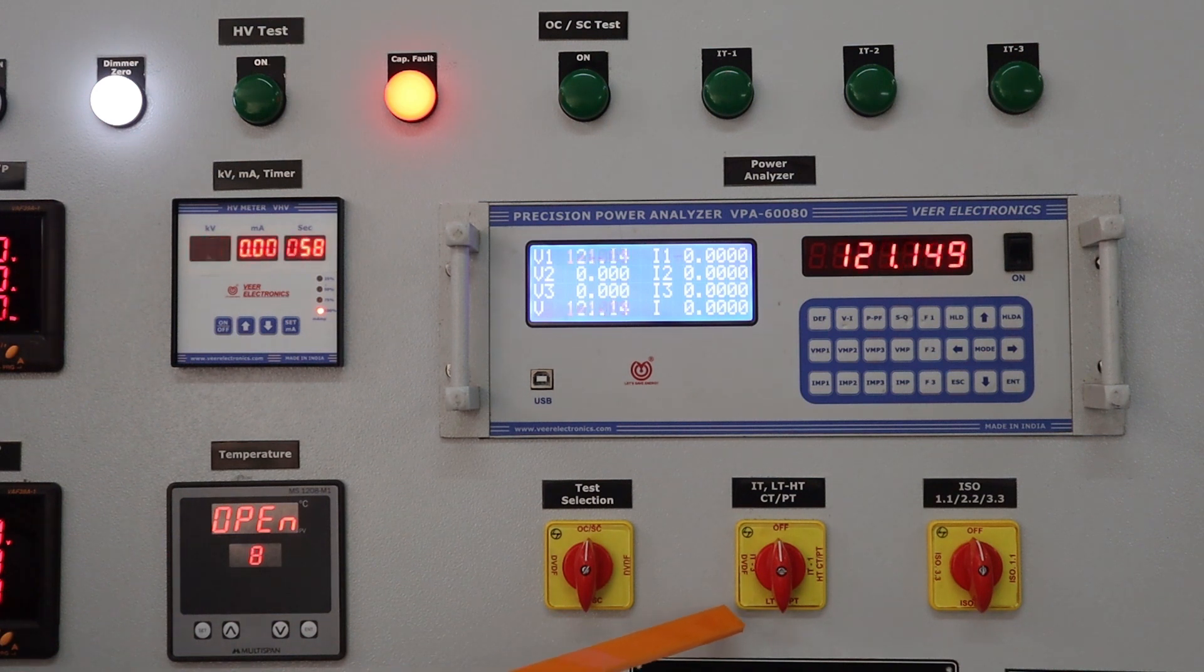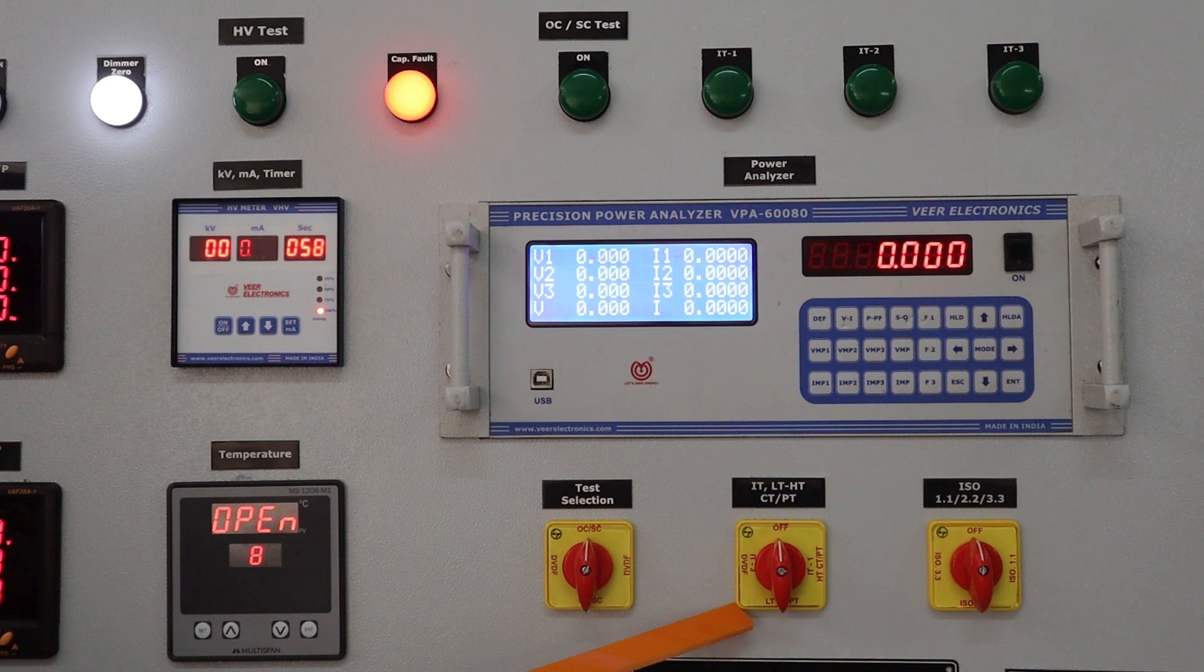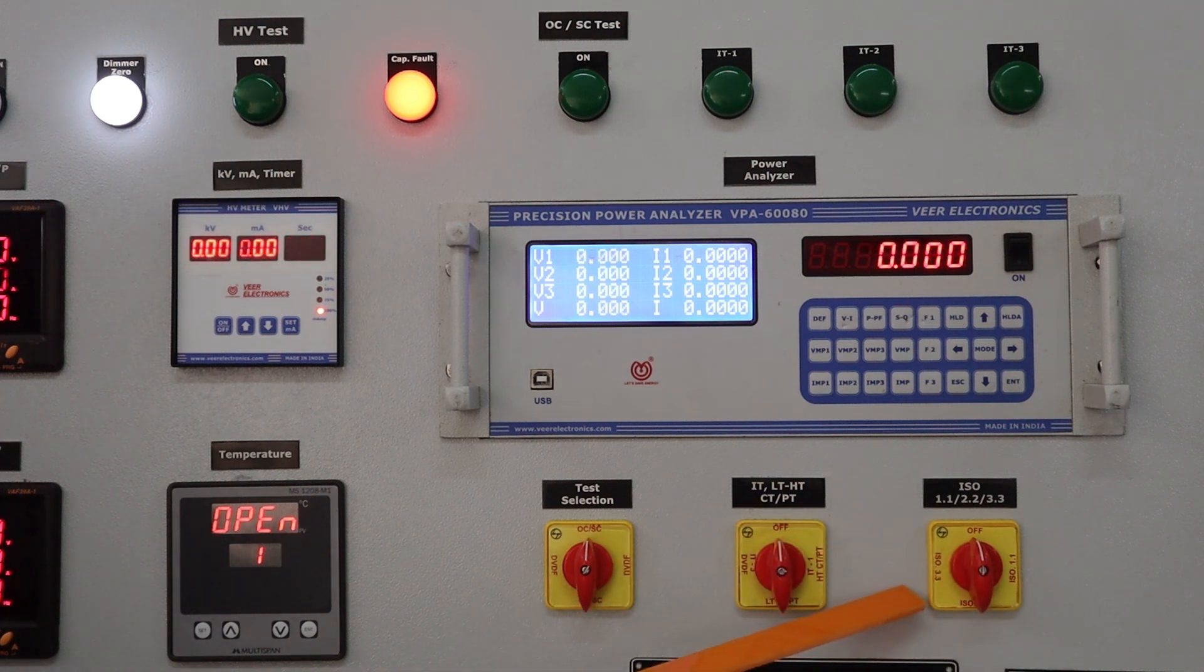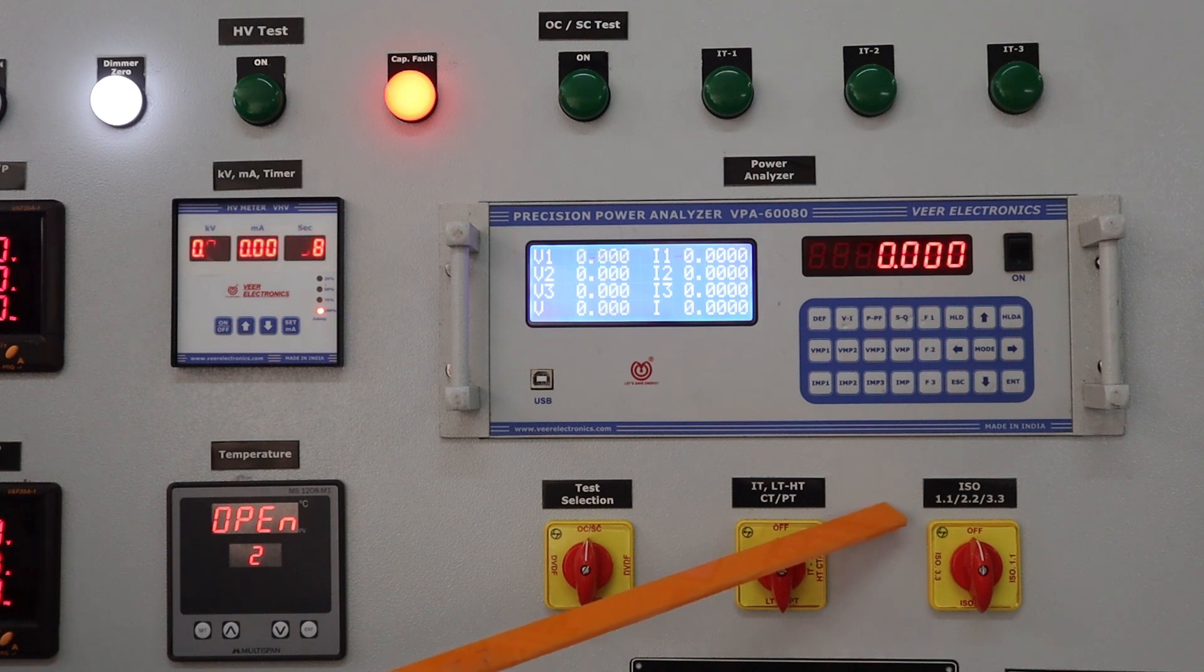We have provided 3 intermediate transformers with this test bench. This is intermediate transformer like HT intermediate and LT intermediate and CTPT selection switch. This is isolator selection switch for 1.1 kV, 2.2 kV and 3.3 kV HT capacitor during short circuit test.